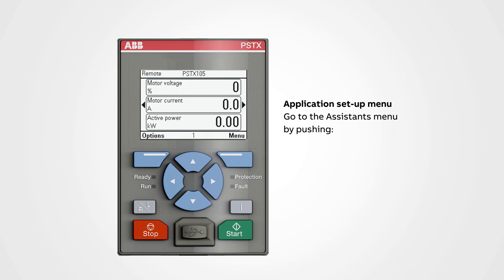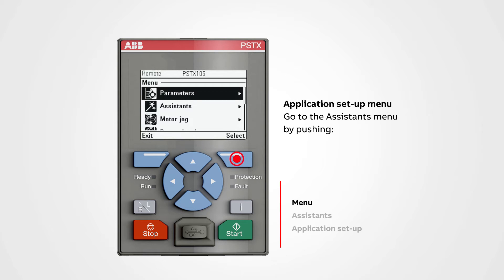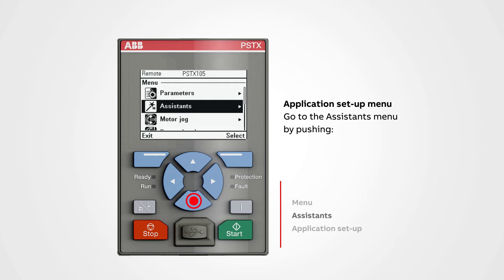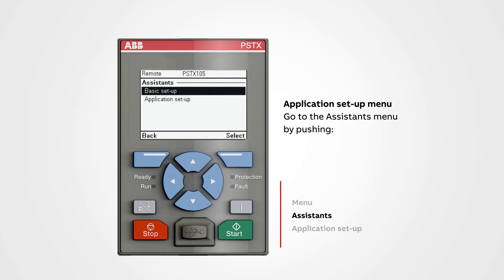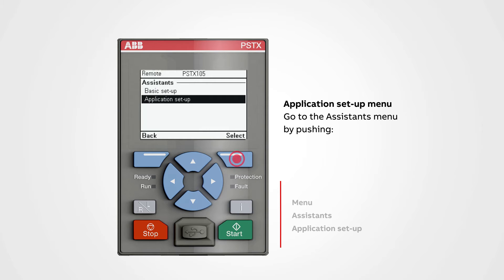Application setup: go to the assistance menu by pushing the menu button. Navigate to assistance, then push select. Go to application setup and then push select to enter the menu.